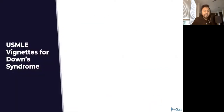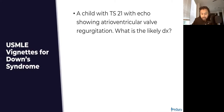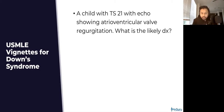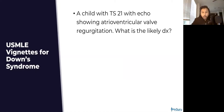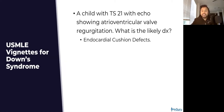Let's go through some high-yield vignettes for Down syndrome in a question-based manner. A child with trisomy 21 has an echo showing atrioventricular valve regurgitation — both atrial and ventricular. This is going to be representative of the endocardial cushion defects associated with Down syndrome.